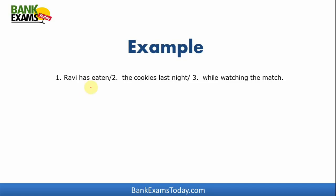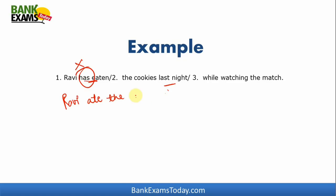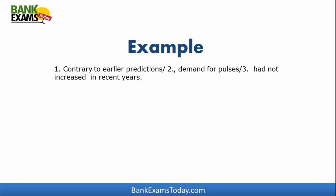Then: "Ravi has eaten the cookies last night while watching the match." The activity happened last night, so it should be in the simple past tense. The error is in the first part — it should be "Ravi ate the cookies last night while watching the match." Reading the sentence carefully is a must, because while you read you will notice a lot about the sentence's meaning.